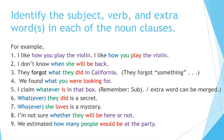Identify the subject, verb, and extra words in each of the noun clauses. Number one: 'I like how you play the violin' — we use colors to explain that. Number two: 'I don't know when she will be back.' 'When' is the extra word, 'she' is the subject, 'will be' is the verb. Number three: 'They forgot what they did in California.' 'What' is the extra word, 'they' is the subject, 'did' is the verb. 'In California' is just a prepositional phrase.